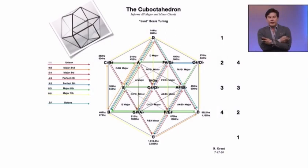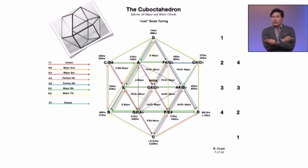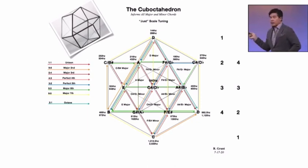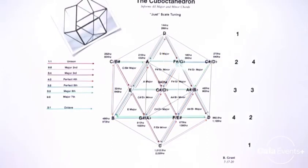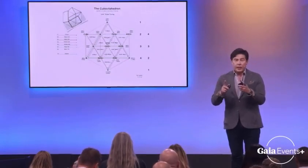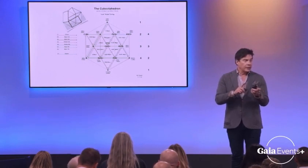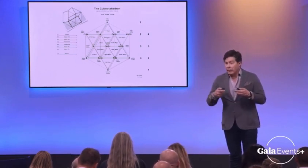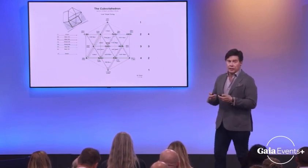How many edges does a cuboctahedron have? 24. Many physicists say this is the structure to consider regarding spacetime. This is called the vector equilibrium — the other name for the cuboctahedron — because it has an equal distance from the center to each vertex, even though it's a compound of both squares and triangles. It's unique, and it's the central thesis of the geometric solids referred to as the Archimedean solids.